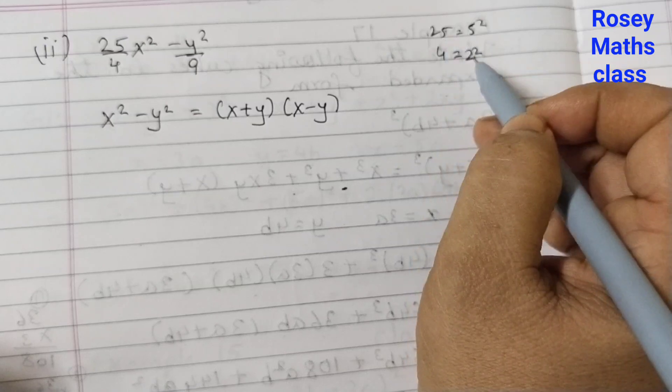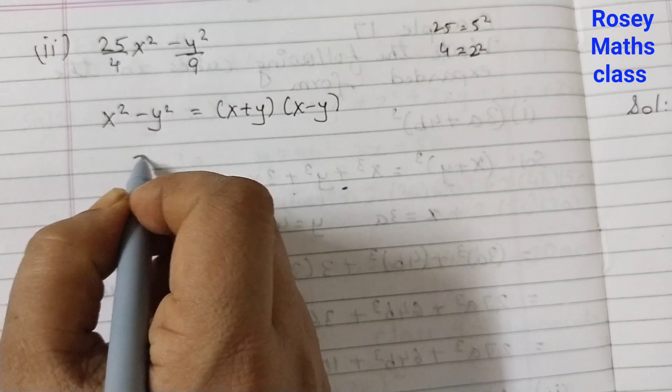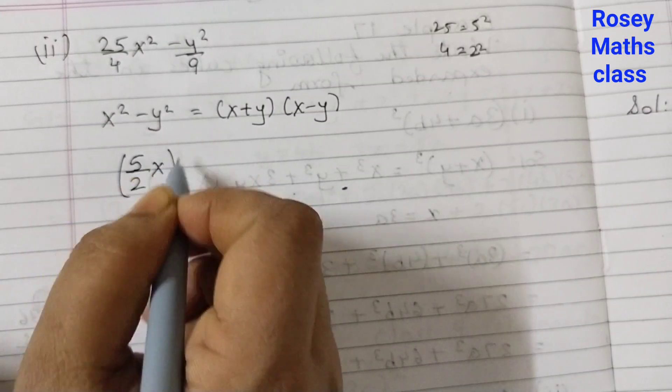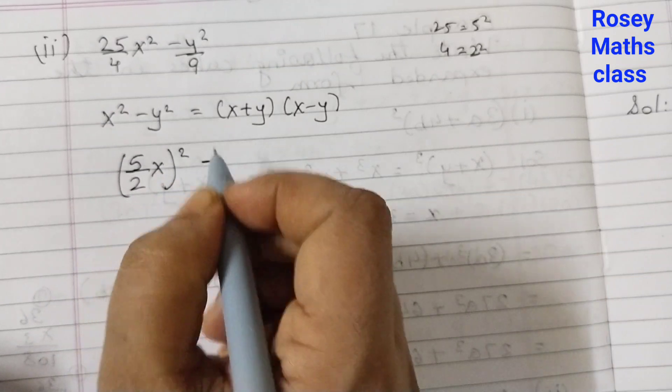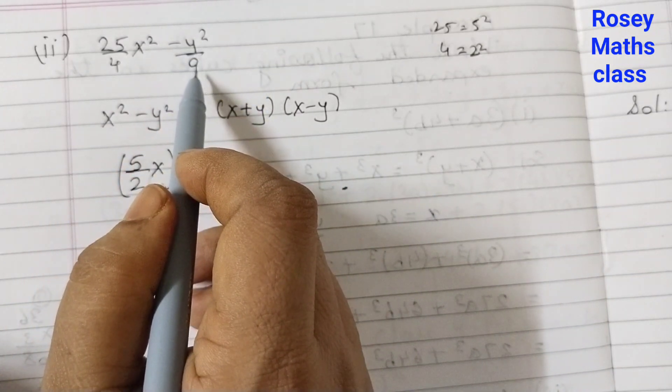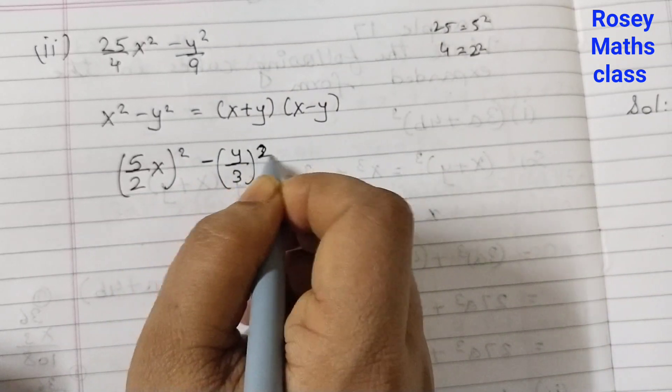5 into 5, 25. 2 into 2, 4. So we can write this as 5 by 2 x squared minus y squared and 9. 3 into 3 is 9. So this can be written as y by 3 squared.